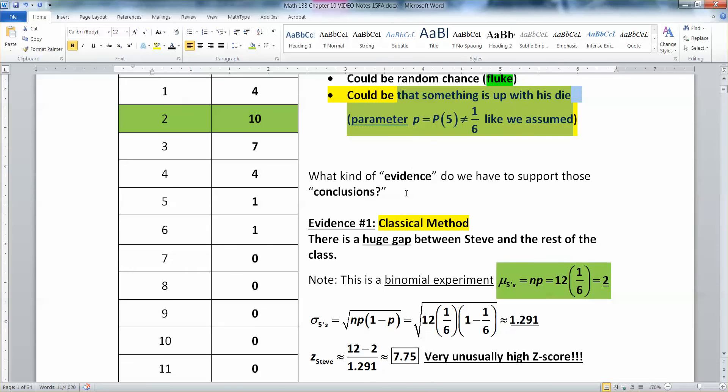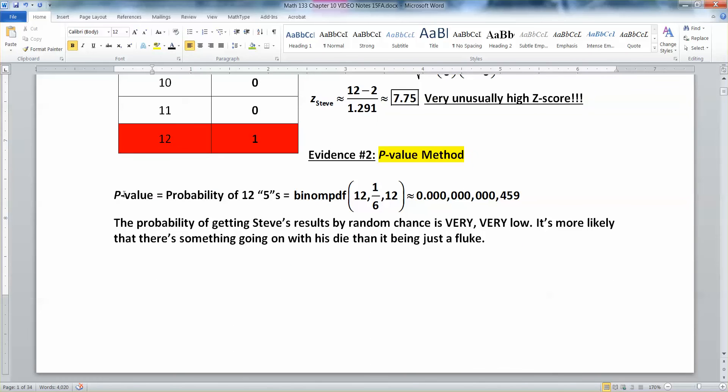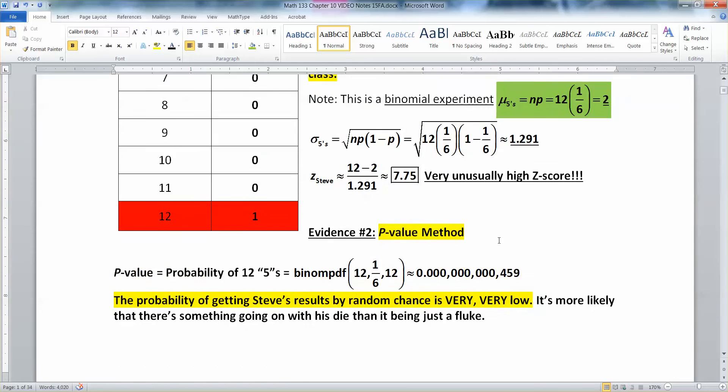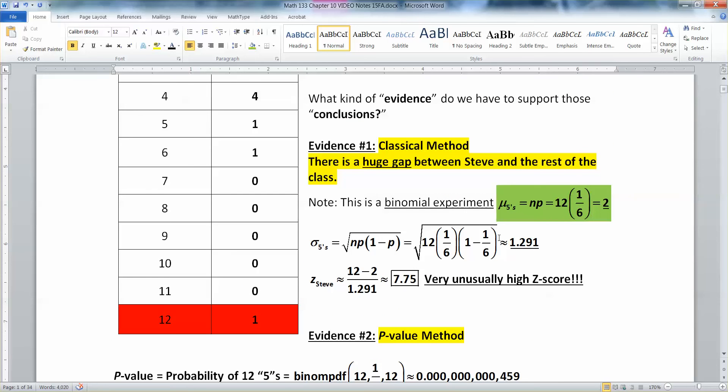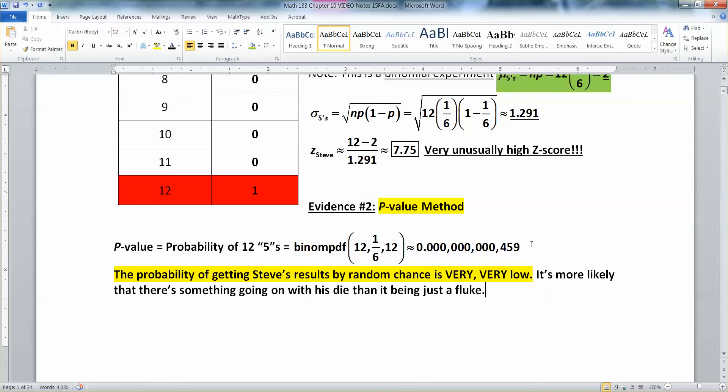So you can either prove something's up with this die by saying there's this huge gap between him and the rest of the group. That's the classical method. And then the p-value method is the probability of getting what he's got is so low that I think it's more likely that something else is going on. Instead, those are the two broad methods we're going to use. The classical method is kind of the older method. You find somebody's Z-score and you kind of show that's far away from the rest of the group. This is so unusually high a Z-score. I call BS and say that there's something going on with his die.